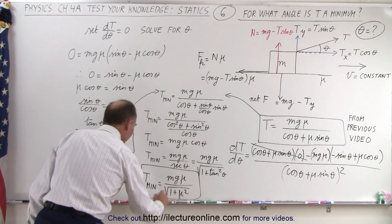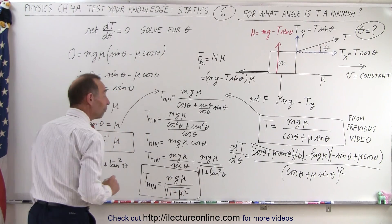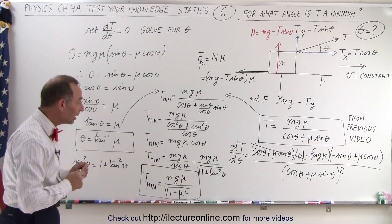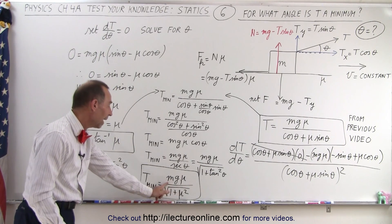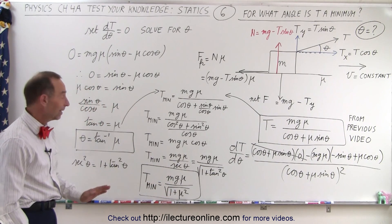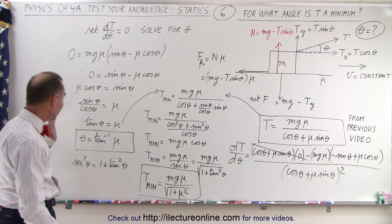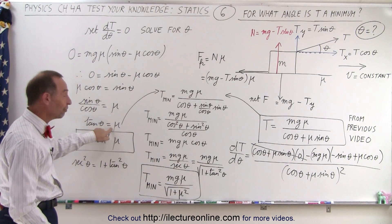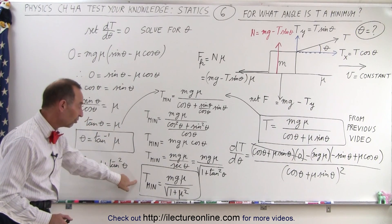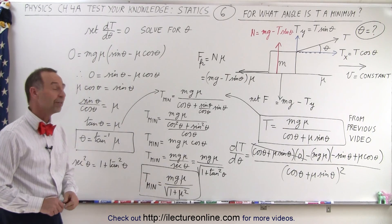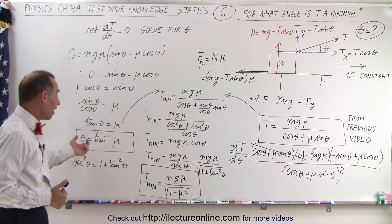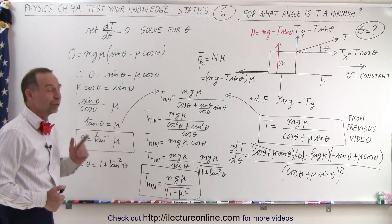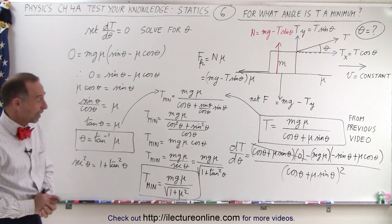This is an interesting way of writing the minimum tension only in terms of mu, m, and g. And that is how it's done — how we get from tangent of theta equals mu for the minimum tension to an expression where the angle is no longer part of it, since tangent of theta equals mu.